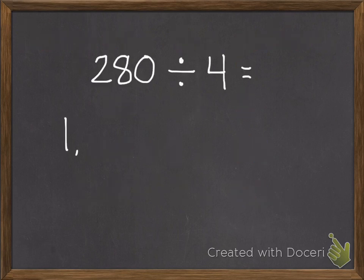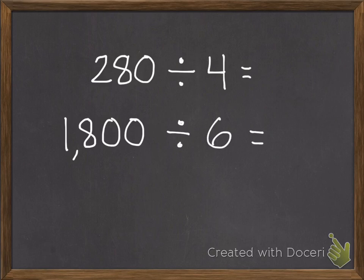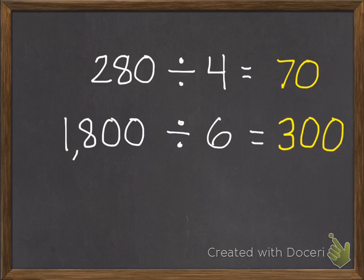Your second and also third practice problems. 280 divided by 4, and 1,800 divided by 6. Go ahead and pause. Here are your answers. 280 divided by 4 equals 70, and 1,800 divided by 6 equals 300.